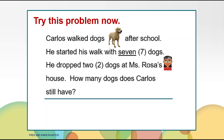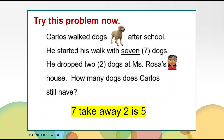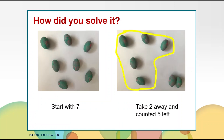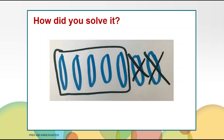Show me what you did. Carlos started with seven dogs. He dropped two dogs at Miss Rose's house, so he has five dogs still. Seven take away two is five. Maybe you put seven counters down, then took two counters away for the two dogs he dropped at Miss Rose's house, and counted five counters left. Maybe you drew seven counters, crossed two off, and counted five left.